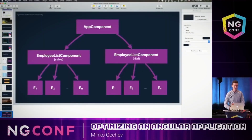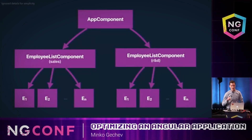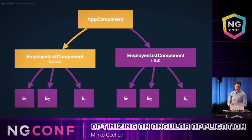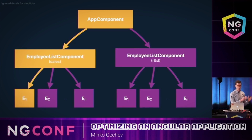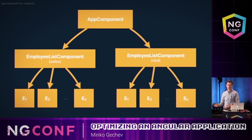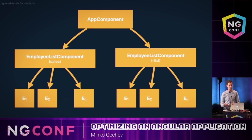Let's see what is actually going on and why change detection gets invoked so often. Each time when the user presses a key on the keyboard, we're going to invoke change detection multiple times — first for the app component, which is the root component in our app. Right after that, we're going to perform the first traversal: we go to the employee list component for the sales department, compute the numeric value for the first employee, the second employee, and so on for all employees in the list. We do the exact same thing for the other department. So we're just typing something into the text box, but change detection gets invoked for each individual component, although there are obviously no changes.